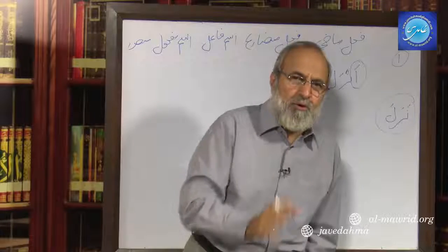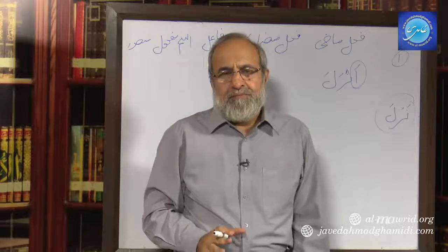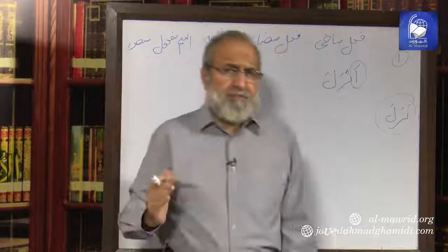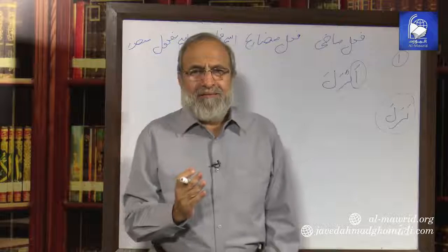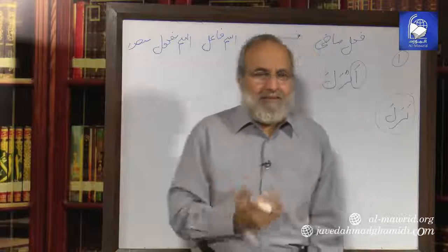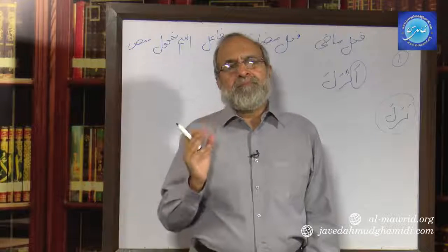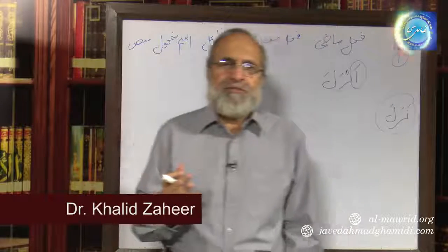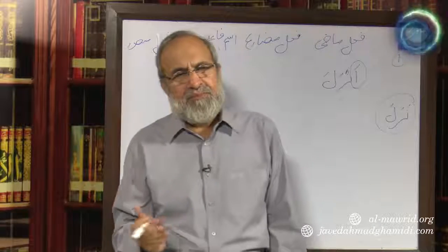To clarify: Anzala, like Nazala, Qatala, and Nasara, is Wahid Muzakkar Ghaib. When we did the Gardaan (matrix) of Zaraba, it was Zaraba, Zaraba, Zaraba... filling 14 boxes. Similarly, in the case of Anzala — except it has one additional letter — it is Anzala, Anzala, Anzalu, Anzalat, Anzalata, Anzalna, Anzalta, Anzaltuma, Anzaltum, Anzalti, Anzaltuma, Anzaltuna, Anzaltu, Anzalna.